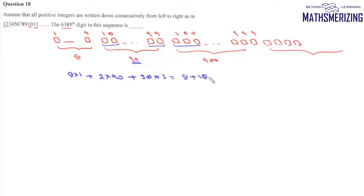So it comes to 9, 180, 2700, which totals 2889. So starting from 1, 2, 3 up to 999, there'll be 2889 digits.